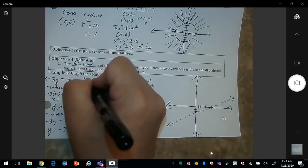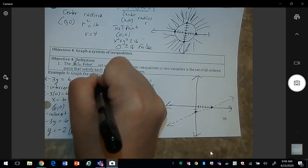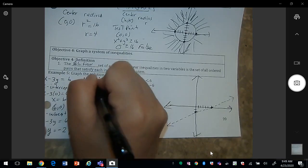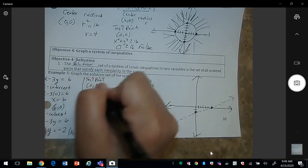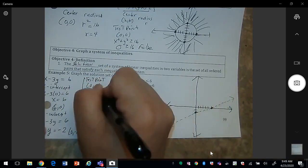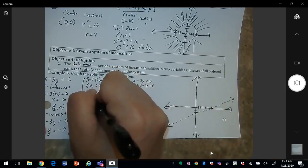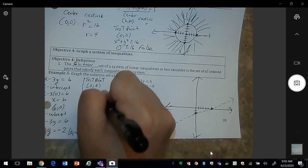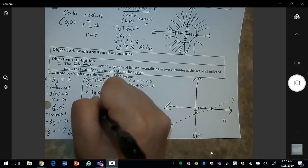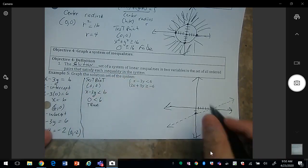And we need to do a test point. We can use 0, 0. So this would be 0 is less than 6, and that's a true statement. So I'm going to shade on top.